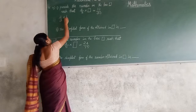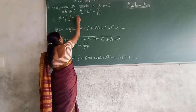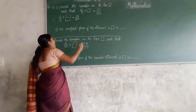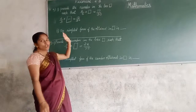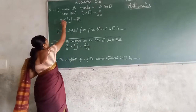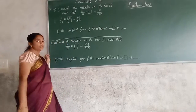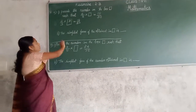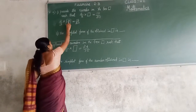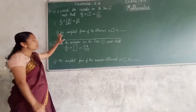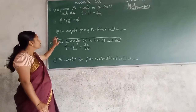Find out: 2 upon 3 — which number if you multiply will you get 10 upon 30? As we know, the product of the numerator: 2 is multiplied by which number to get 10? That is 5. And 3 multiplied by which number gives you 30? That is 10. So we have got that the number in the box is 5 upon 10.